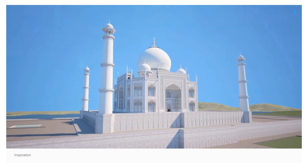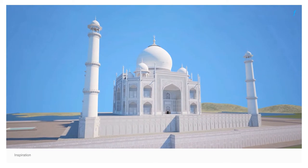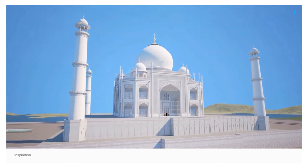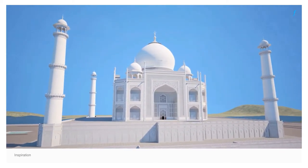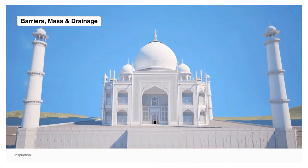Ever wondered the amount of energy consumed by these structures to stay cool? Zero. These monumental buildings, built a couple of centuries before the application of electricity became common practice, use a three-fold approach for cooling: barriers, mass, drainage.